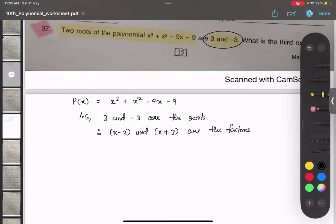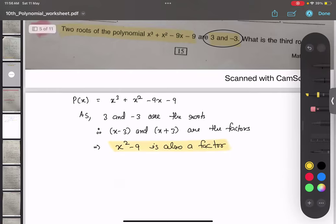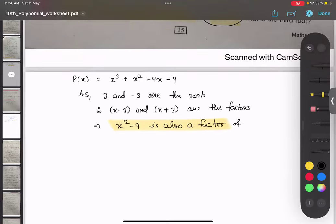Therefore (x-3) and (x+3) are the factors. Make sense? Let us multiply these, so x²-9 is also a factor. This is also a factor of P(x), the polynomial which was given.